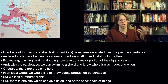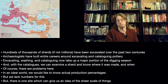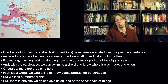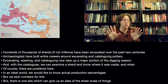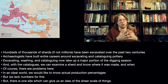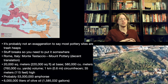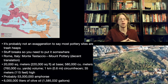Of course, there are problems here. In an ideal world we would like to know what actual production percentages would look like. We don't have the accounting data and the economic data — we don't have the numbers — to tell us this. But there is one archaeological dig site which can give us an idea of the sheer scale of the production of the Roman Empire. And perhaps it should not surprise us that, pottery being pottery, that site is a trash heap.